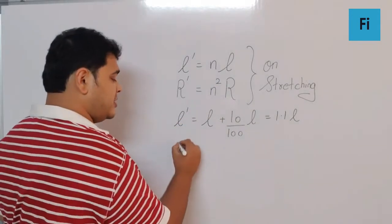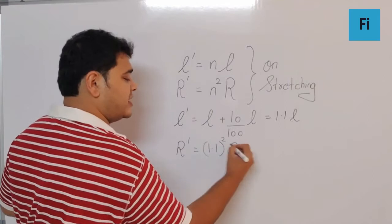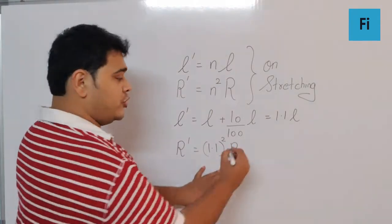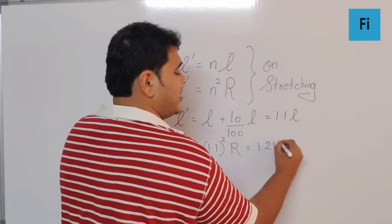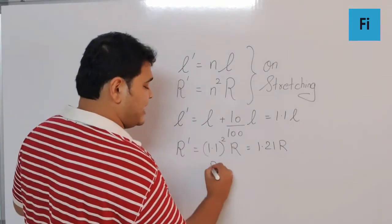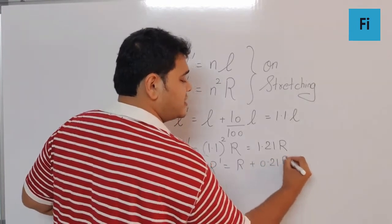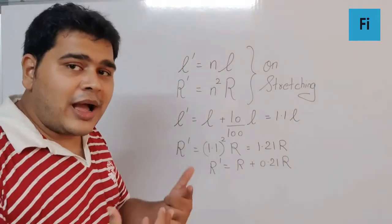I get the new resistance as 1.1² of R, which means it is going to be 1.21R. Which definitely I can write as R' = R plus 0.21R.